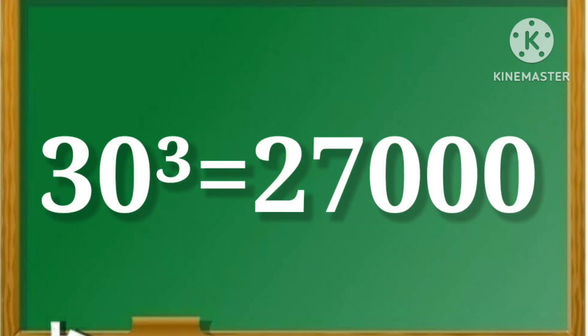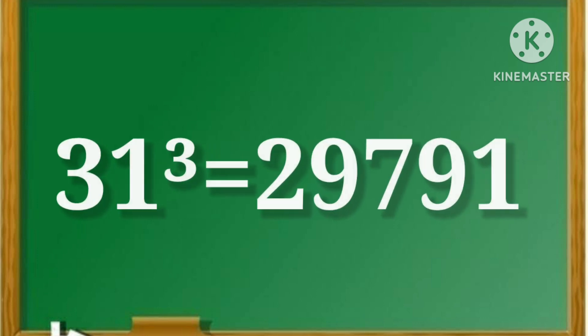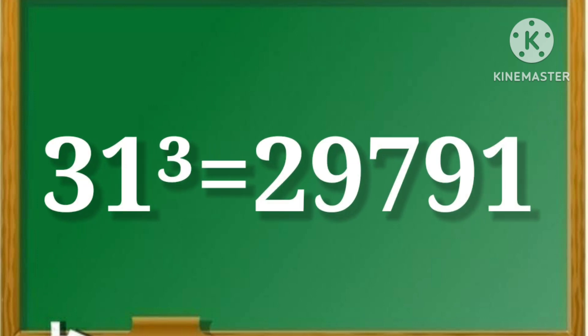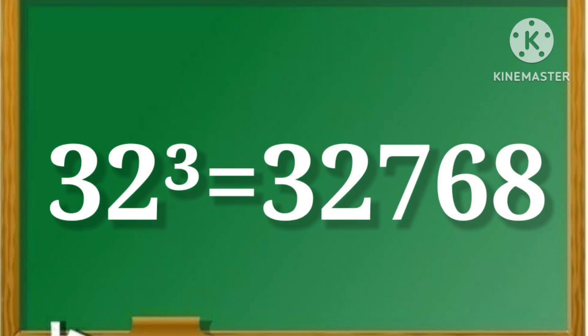30 cube is equal to 27,000. 31 cube is equal to 29,791. 32 cube is equal to 32,768.